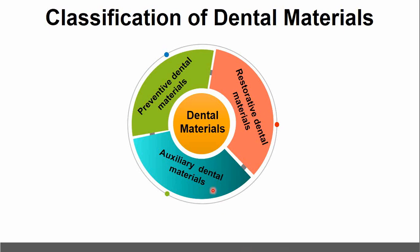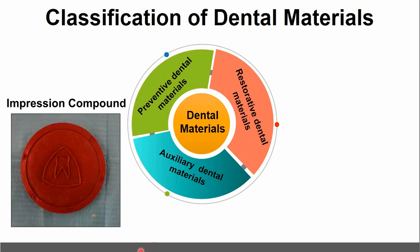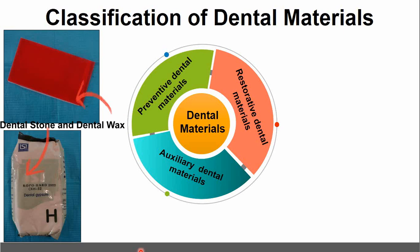The last type is auxiliary dental materials. Auxiliary dental materials are used for the fabrication of dental prostheses or appliances. A few examples include dental impression materials such as alginate, impression compound, dental stones, and dental waxes.